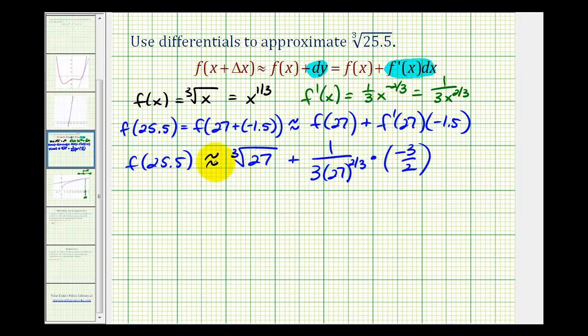Now let's simplify this. It's going to be 3 plus, 27 to the 2/3—that's the cube root of 27, that's 3 squared, so that'd be 9—and then times 3. This is 1/27 times negative 3/2.